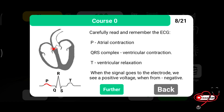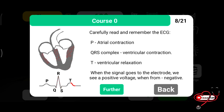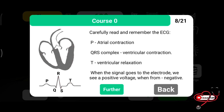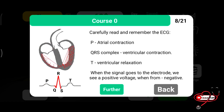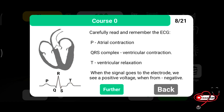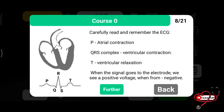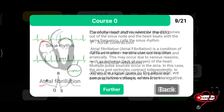You can see the heart pumping. Electrical activity occurs first in the SA node, then goes to the AV node, then to the Purkinje fibers. On the ECG, the PQRST waves: the P wave shows atrial contraction, the QRS complex shows ventricular contraction, and last is the T wave. When the signal reaches the electrodes, we see a positive voltage.